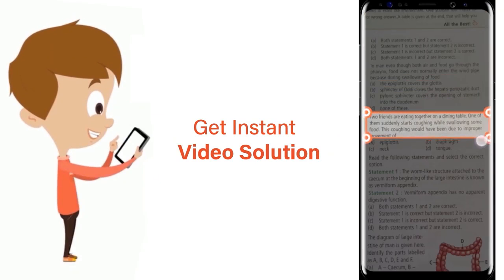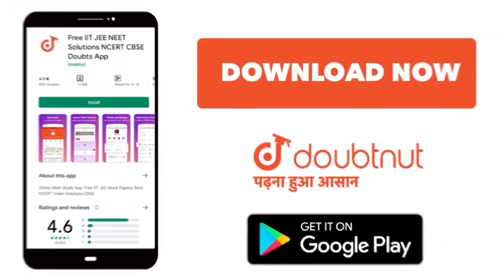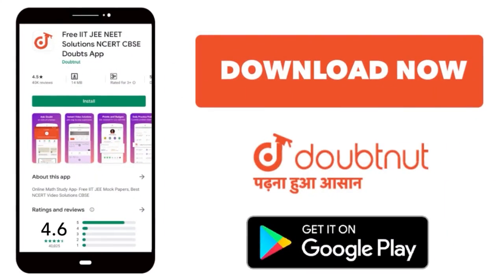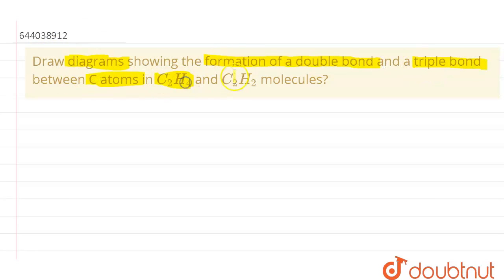The question says: draw diagrams showing the formation of double and triple bonds between carbon atoms in C₂H₄ and C₂H₂ molecules.